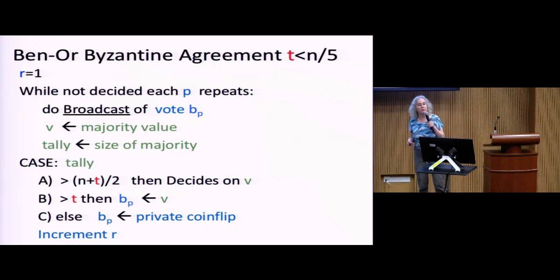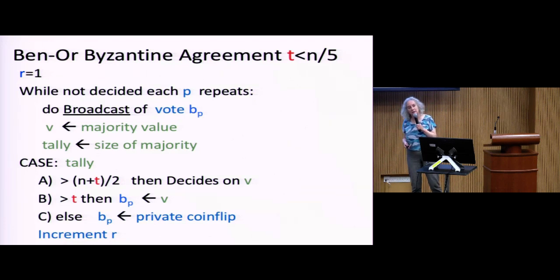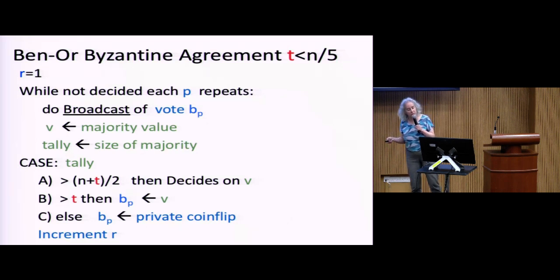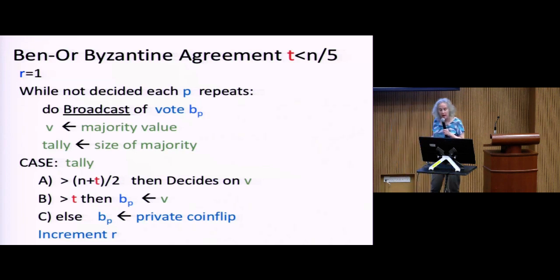There's a broadcast subroutine. Everybody sends out their bit, sets their vote to the majority value, and counts the tally of the majority size. There are three cases depending on the tally: if it's bigger than (N plus T) divided by 2, they decide on V; if it's bigger than T, they set their bit to the majority value but don't decide; and if it's smaller, they toss a coin and set their bit to the coin value. Then they go to the next round.